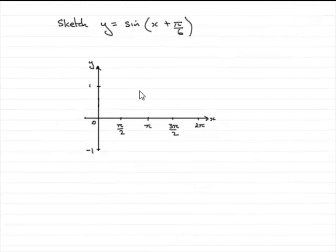Now in the first part of the question, we've got to sketch y equals sine of x plus pi upon 6 for x going between 0 and 2 pi.